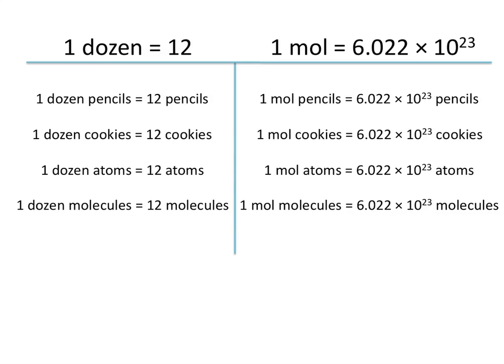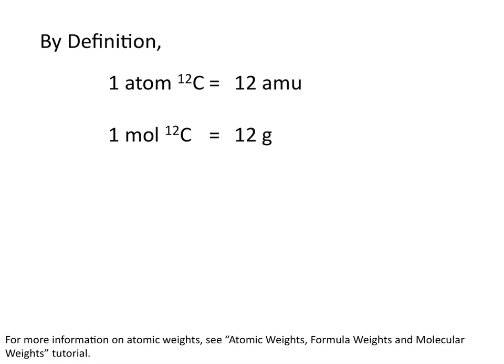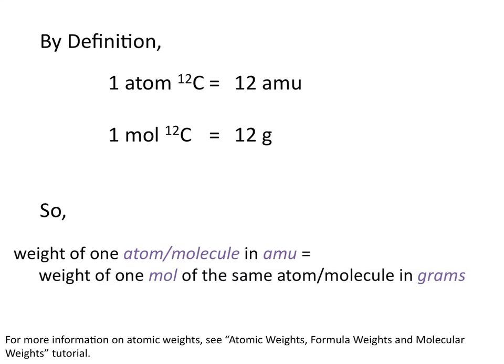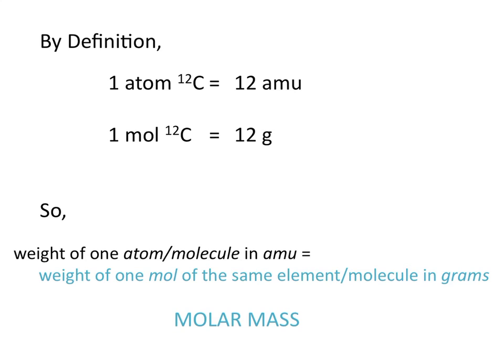We don't often talk about having a mole of pencils or a mole of cookies because that's such an extreme amount of everyday objects — we talk about moles more in relation to atoms or molecules. By definition, one atom of carbon-12 is equal to exactly 12 amu, or atomic mass units. And so one mole of carbon-12 is equal to exactly 12 grams. The weight of one atom or molecule in atomic mass units is equal to one mole of that same atom or molecule in grams. We call the weight of one mole of an element or molecule its molar mass.